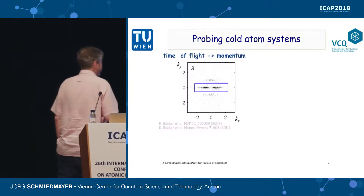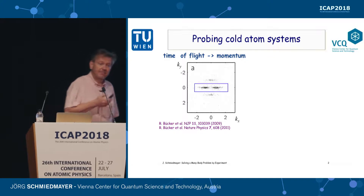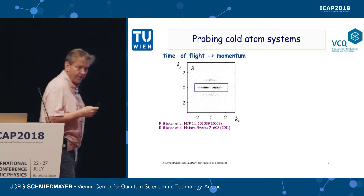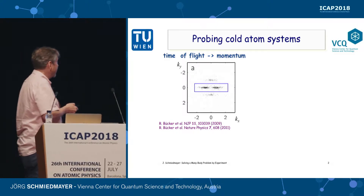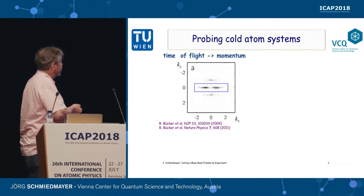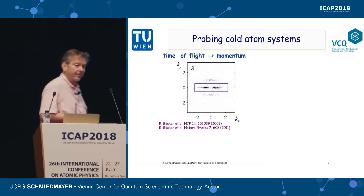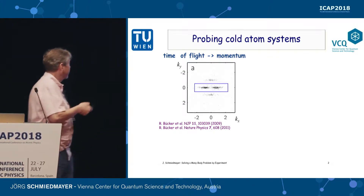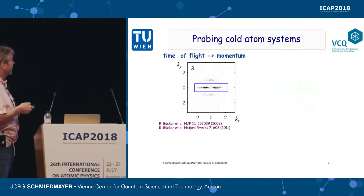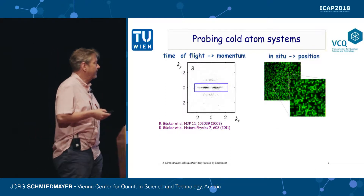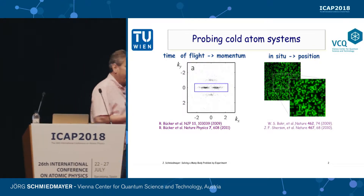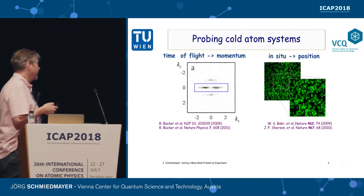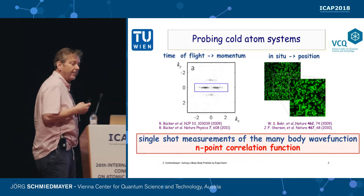In cold atom experiments, we usually take pictures. The best thing you can do is to measure every atom, its internal state and its position at some specific time. For example, here is an image where every dot is a single atom — an image of a parametric oscillator which produces twin atom beams, about a hundred here and a hundred here. You can do that in time of flight to measure momentum, or in situ in an optical lattice where you have the position of every atom. What we measure is basically a single-shot measurement of a many-body wave function.